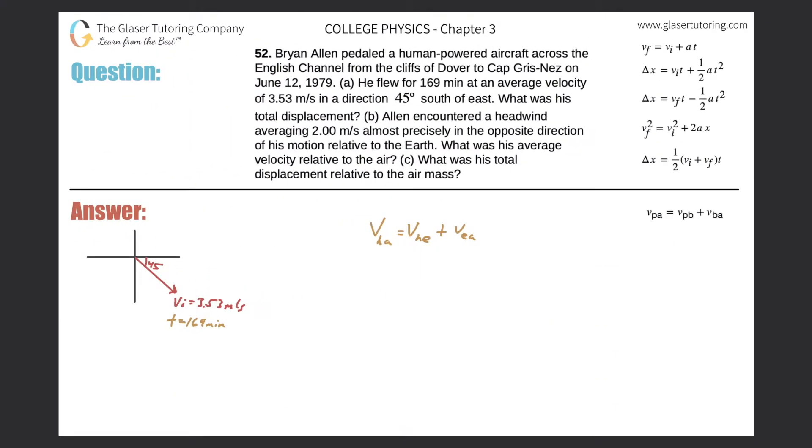Number 52. Bryan Allen pedaled a human-powered aircraft across the English Channel from the cliffs of Dover to Cap Grenet on June 12, 1979. Letter A: He flew for 169 minutes at an average velocity of 3.53 meters per second in a direction of 45 degrees south of east. What was his total displacement?